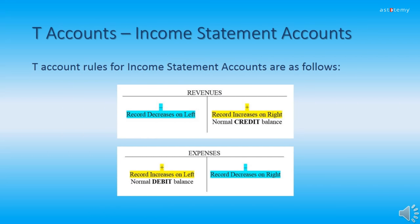Now it's time to add income statement accounts to the mix. T-Account rules for income statement accounts are as follows: For revenues, you record increases on the right and revenue accounts have a normal credit balance. For expenses, you record increases on the left and expenses have a normal debit balance. As we go through these exercises, it's a good idea to have the first two pages of your handout handy as well as the chart of accounts handout in the introductory module.